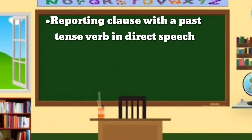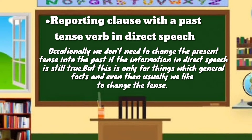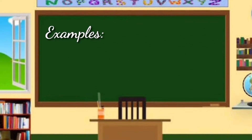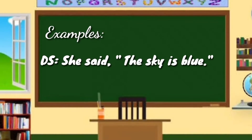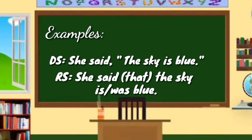For a reporting clause with a past tense verb, occasionally we don't need to change the present tense into past — if the information in the direct speech is still true, such as general facts. For example — DS: She said, 'The sky is blue.' RS: She said that the sky was blue. Note that the use of 'that' is optional in reported speech; both forms are correct.